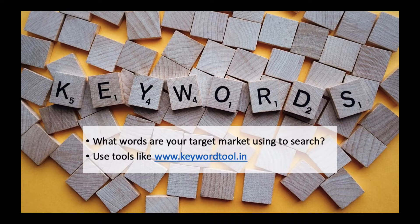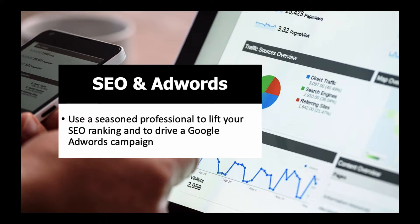SEO focuses on the key pages of your website — your home page plus any other pages that convert and generate revenue. You need to understand your keywords: what keywords is your target market using to search? You can use tools like the Keyword Tool to find the keywords your target market uses to search for your products or services and build those into your website. Once your SEO is happening, you can use Google AdWords to drive people to your business.